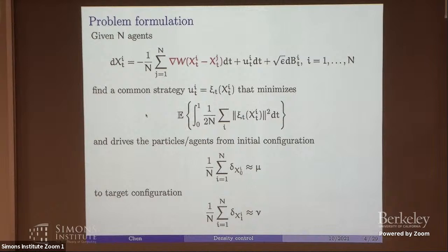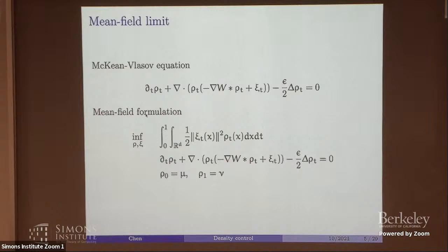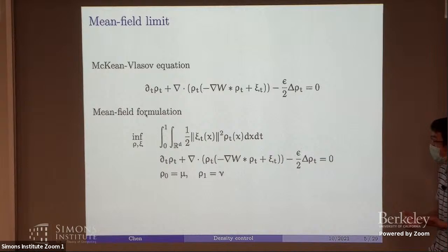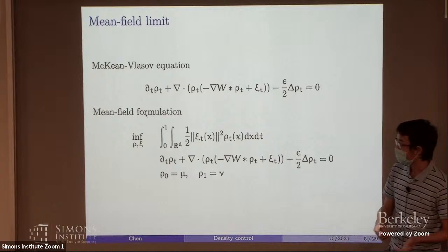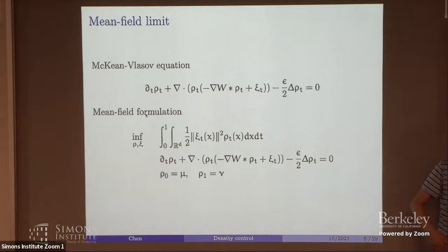We are interested in this problem in the mean field limit — when N is large. When N is large, we can approximate this dynamics using the McKean-Vlasov equation. The law μ_t really captures the distribution of the agents. This is just a standard McKean-Vlasov equation, and we also put the control here because this will control the overall drift. In the mean field limit, the average control cost looks like the integral over μ_t. So our formulation has this evolution of the density with marginal constraints at the initial and terminal time.